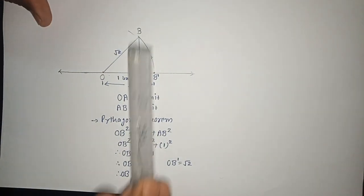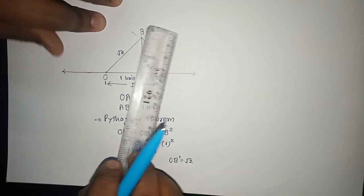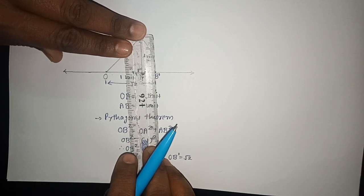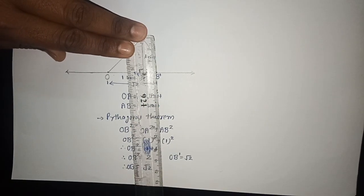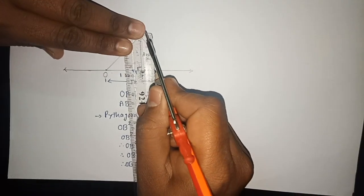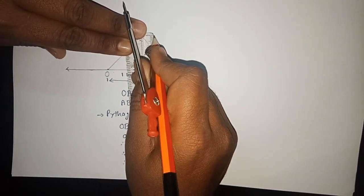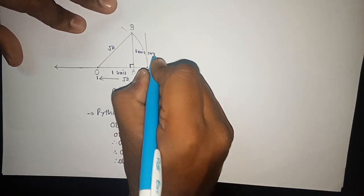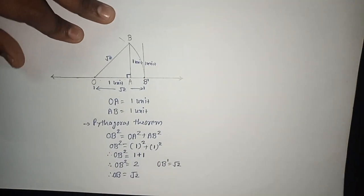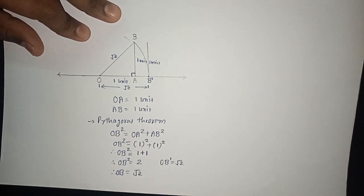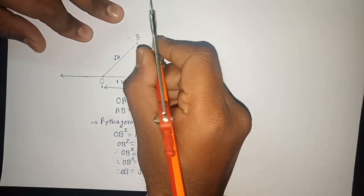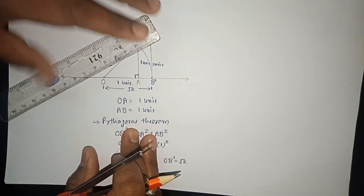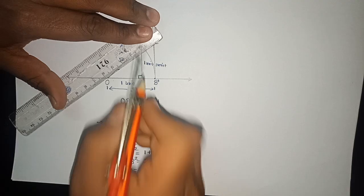For that, from point B dash I will take a perpendicular line with 3 centimeter measure, because we have taken 3 centimeters equal to one unit. So I will draw the perpendicular here. This is also taken to be one unit. Now I will join this line. Let me give the name of this new point — let this point be C. I will join O and C.